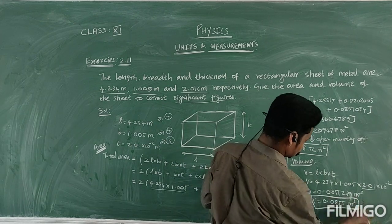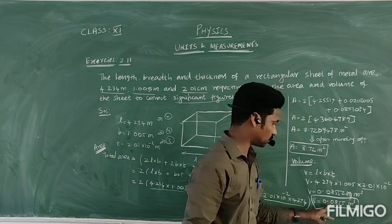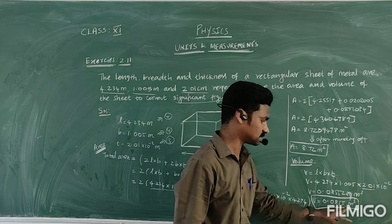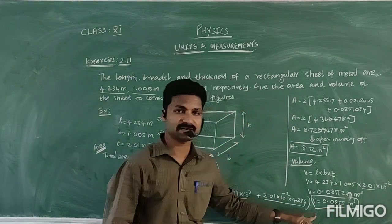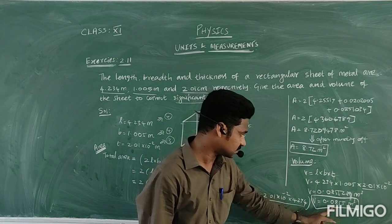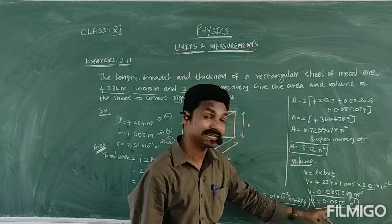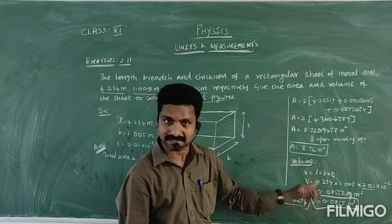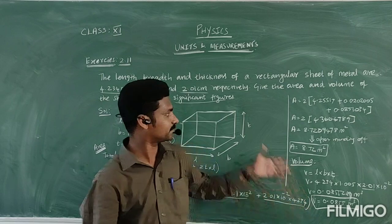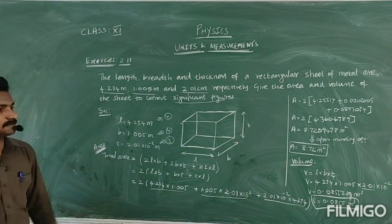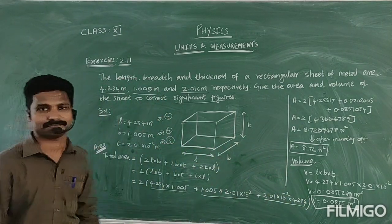So volume = 0.0825 meter cubed, and here the significant figure count is 3 — because the leading zeros are not considered as significant figures. Thank you.